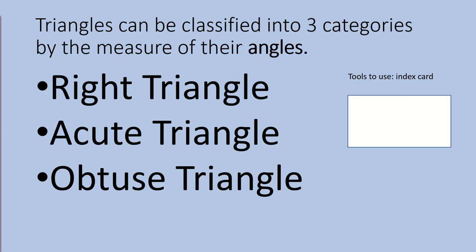Triangles can be classified into three categories. This can be done by looking at the measure of their angles. You can have a right triangle, an acute triangle, or an obtuse triangle. On the right of the screen you can see a tool that we will be using to help us classify the triangles. If you don't have an index card, you can use the corner of a sheet of paper.